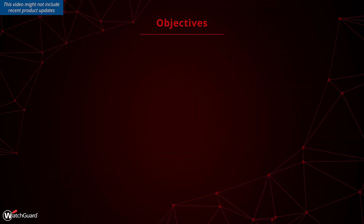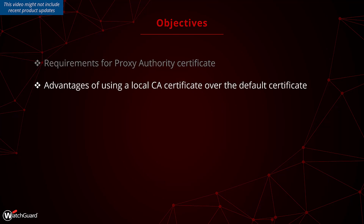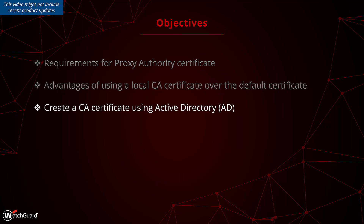In this video we'll cover how to use a local PKI to create a CA certificate for use with the HTTPS proxy outbound content inspection. First we'll cover the requirements for the proxy authority certificate, then the advantages for using a local CA certificate for this purpose, and lastly a demonstration of using Active Directory to create one of these certificates to import onto the firebox.